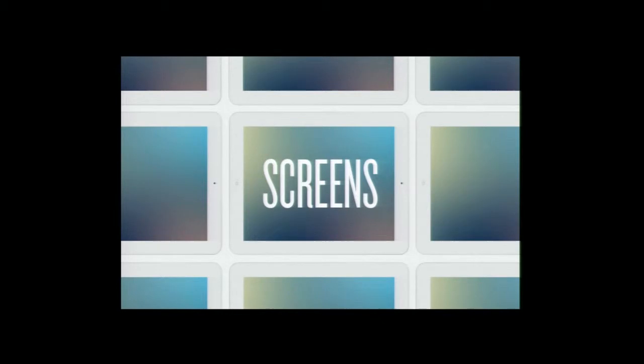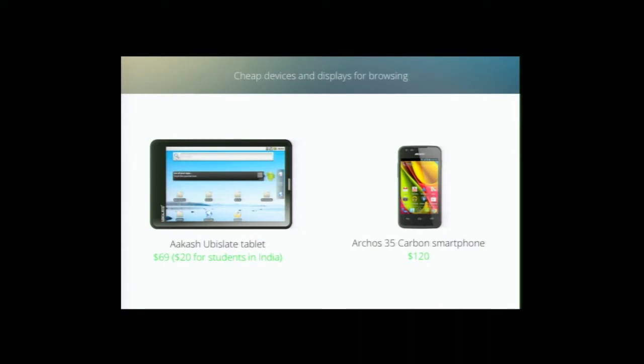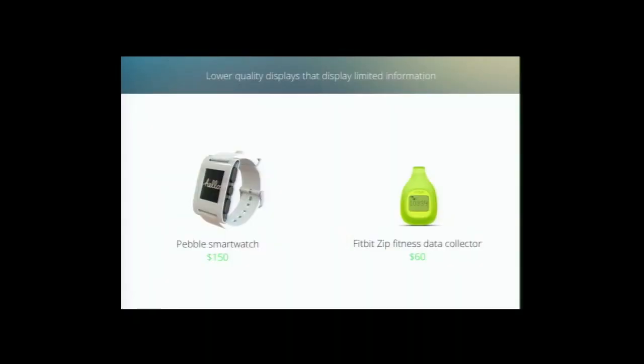Another benchmark of the ubiquitous internet is the idea of multiple screens. The first trend is cheap devices and cheap displays for browsing. The Aakash UbiSlate tablet released earlier this year for $69 US, subsidized by the Indian government so students in India can purchase it for $20. In Europe they just put out an Android smartphone for $120 — one of the cheapest smartphones available, not yet in the U.S. — giving you a sense of where technology is going toward this 'good enough' device that has web access even without all the bells and whistles.